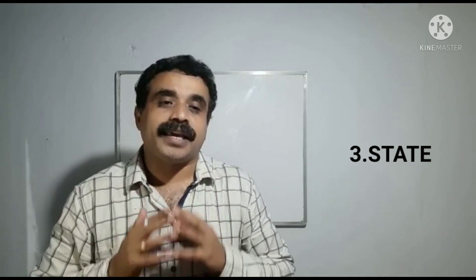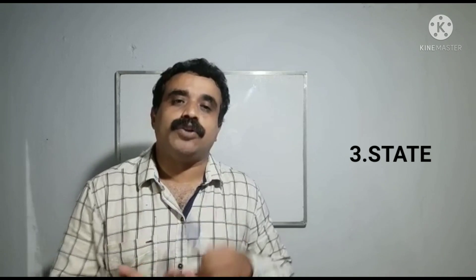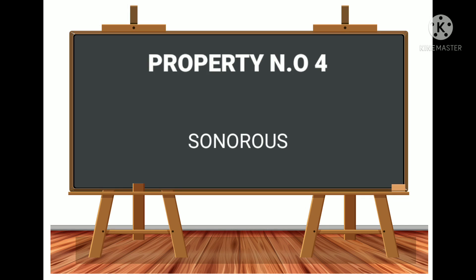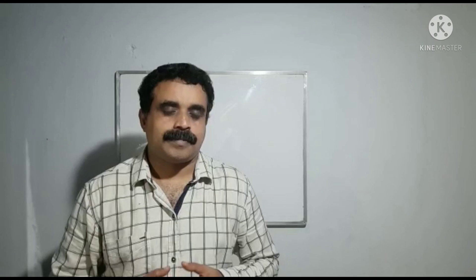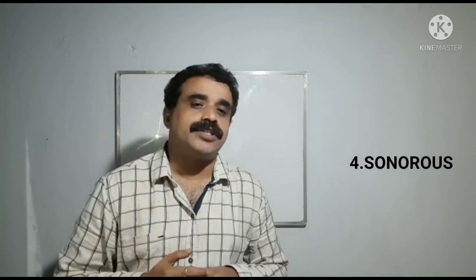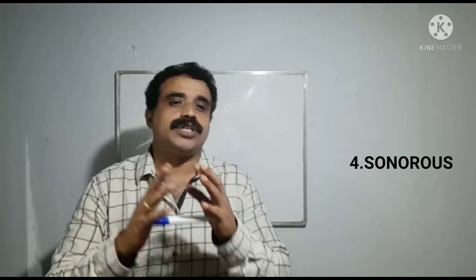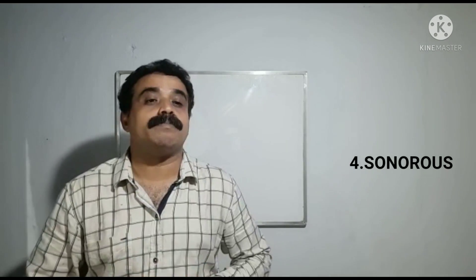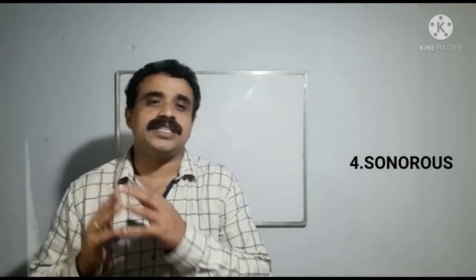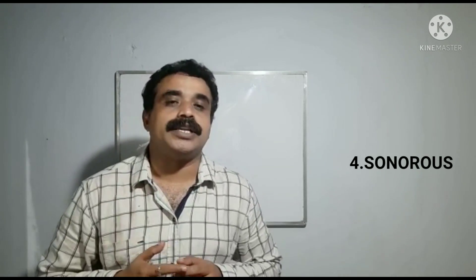Metals like gallium and cesium become liquid when you keep them in your palm. Property number four: sonorous. Metals produce a ringing sound, so metals are called sonorous. This sound is also known as metallic sound, which is why metal wires are used in making musical instruments.